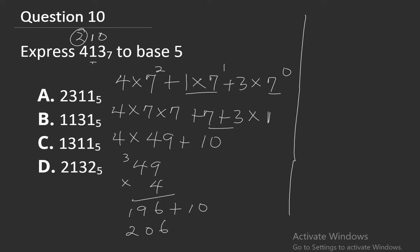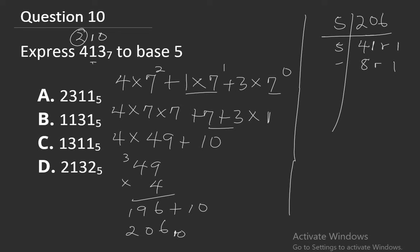Now converting 206 from base 10 to base 5 by repeated division: 206 divided by 5 gives 41 remainder 1. 41 divided by 5 gives 8 remainder 1. 8 divided by 5 gives 1 remainder 3. 1 divided by 5 gives 0 remainder 1.